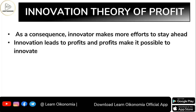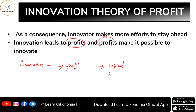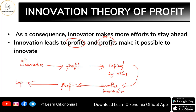Each innovation gives profit for the businessman, and that is why Schumpeter's theory is known as the innovation theory of profit. The innovator makes more efforts to stay ahead always, because innovation leads to profit and profit creates possibilities to innovate further. This is a cycle: innovation leads to profit, profit gets copied by others, so the person goes for another innovation, and the cycle of innovation, profit, and copying continues indefinitely.